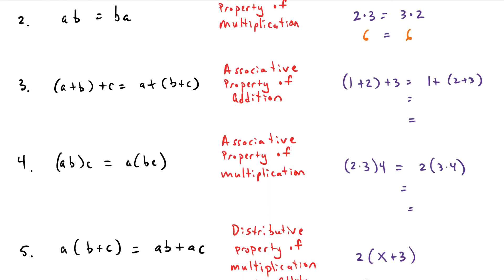The third property is the associative property of addition. If you have three or more things added together, you can group them however you want. You can group the first two, add those together, and then add C later, or you can group the second two and add them first. In our example, 1 plus 2 grouped together gives 3, and then 3 plus 3 equals 6. Or if we add 2 and 3 first, that gives 5, and 1 plus 5 equals 6. Both ways give 6, so it checks out.